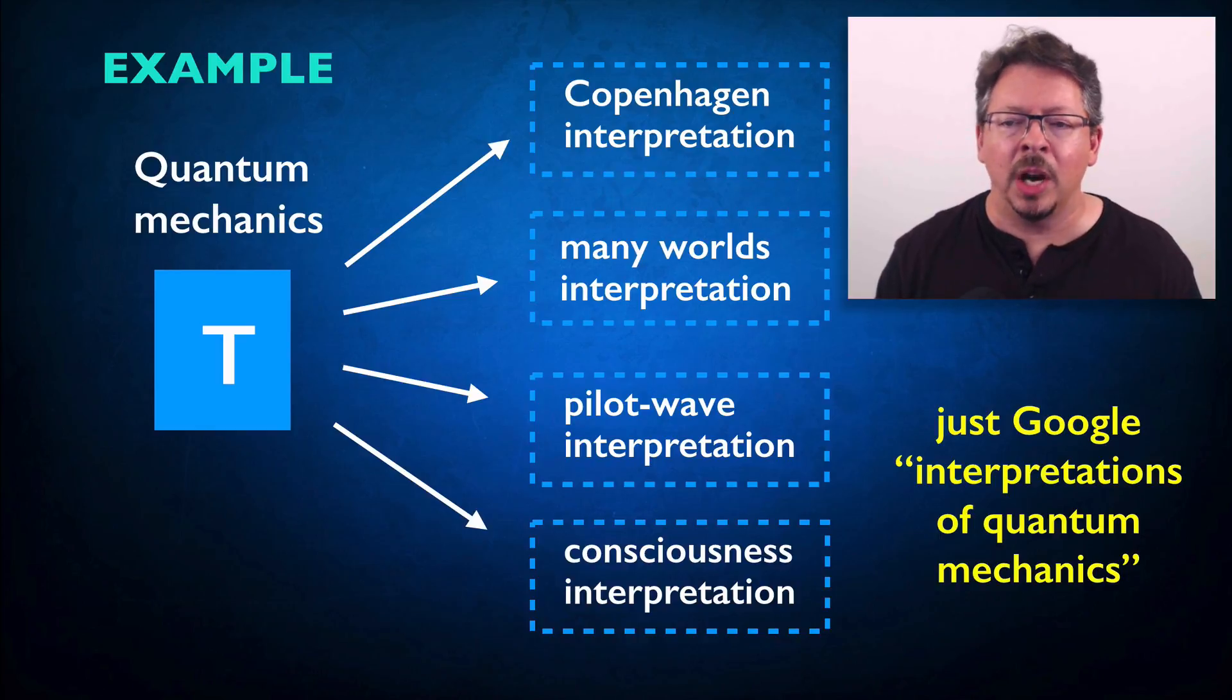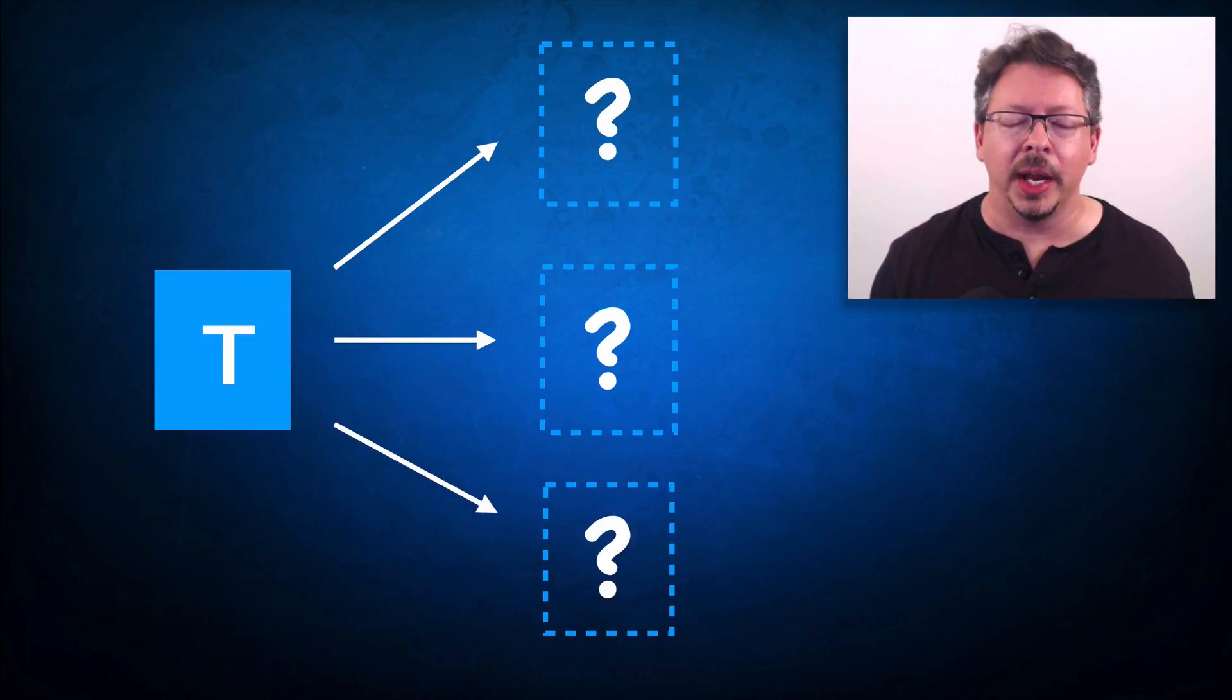You get this problem in quantum theory partly because it's so well formulated that it's possible to draw a clear distinction between the empirical content of the theory and the philosophical superstructure that surrounds our attempts to interpret it as a theory of the structure of the world. For most theories in science, especially outside of physics, it's different.